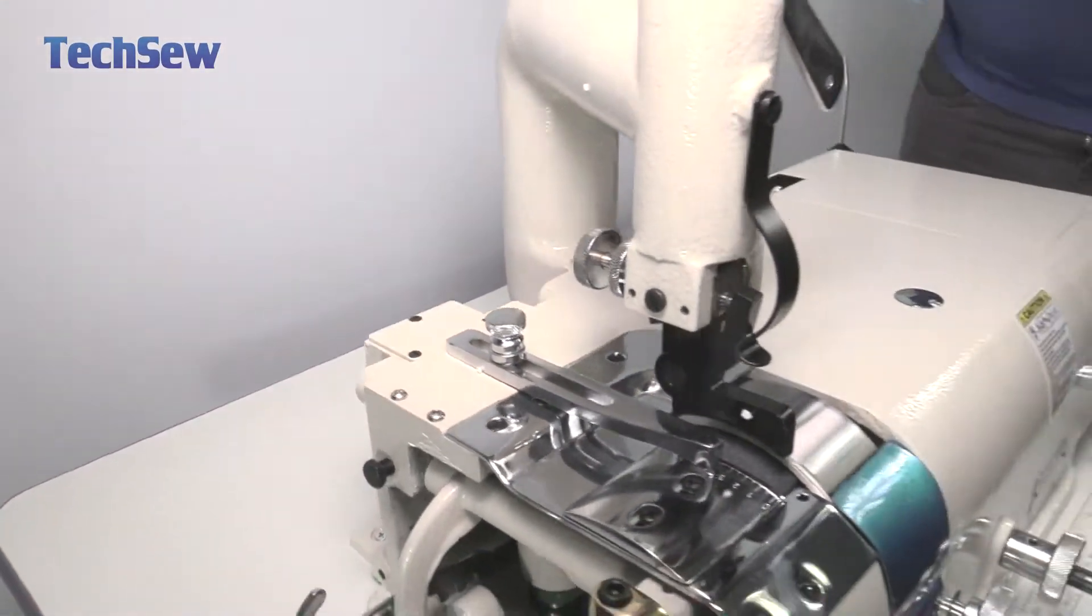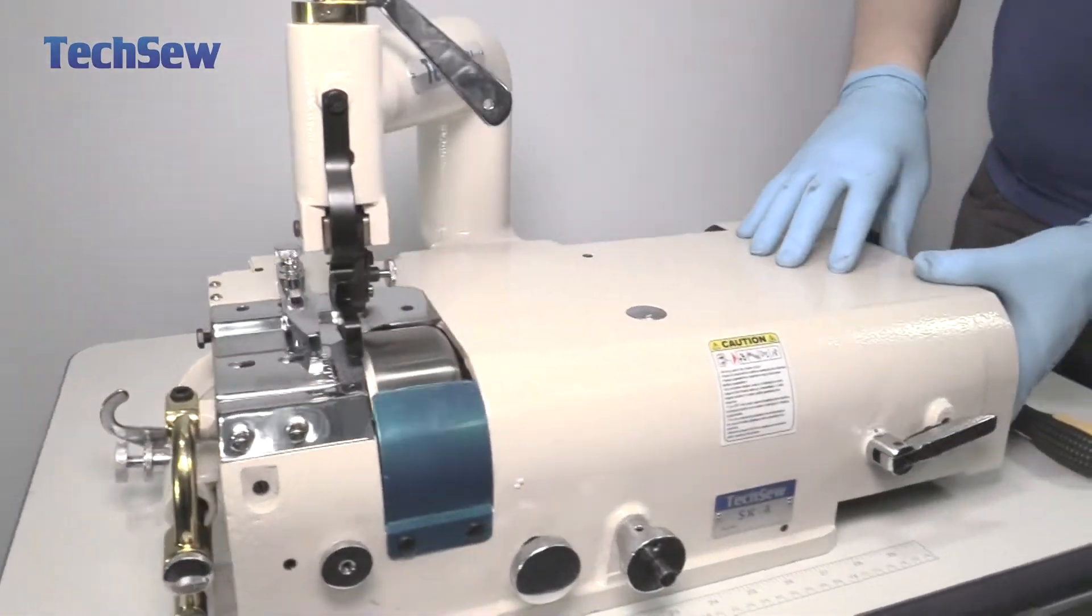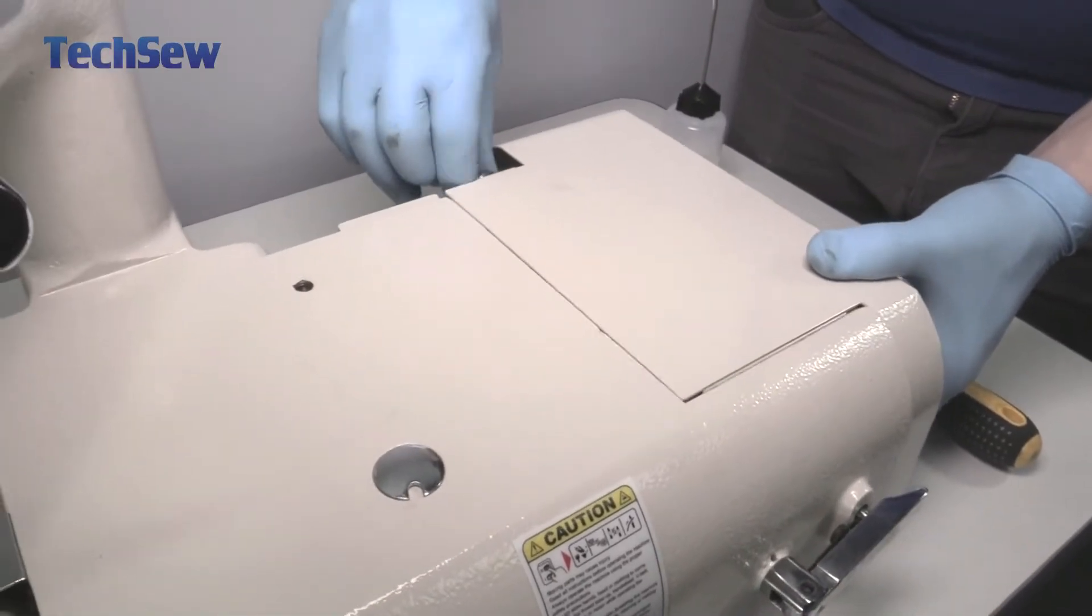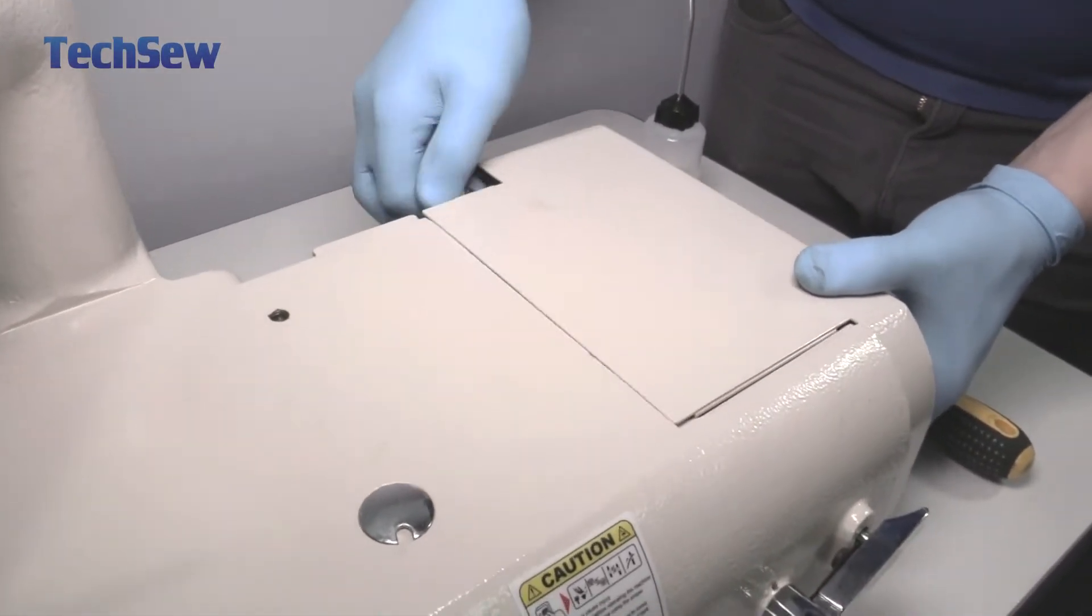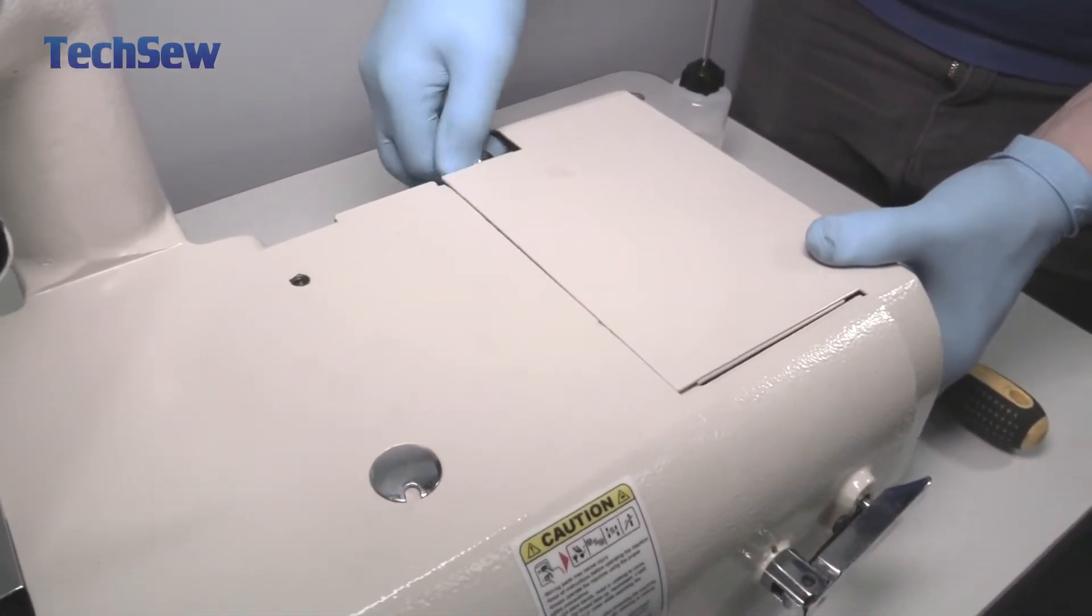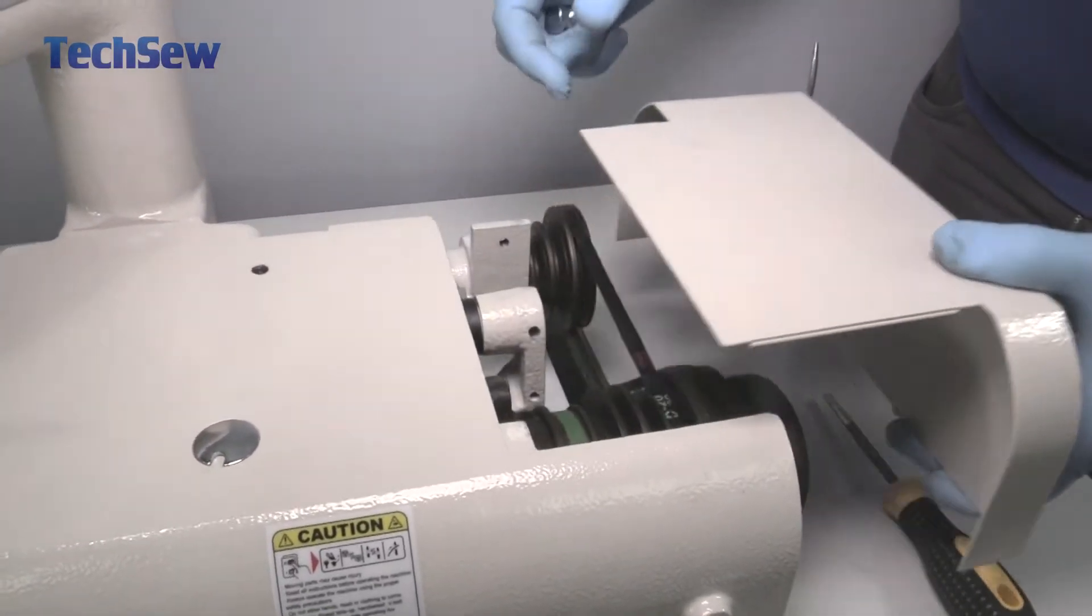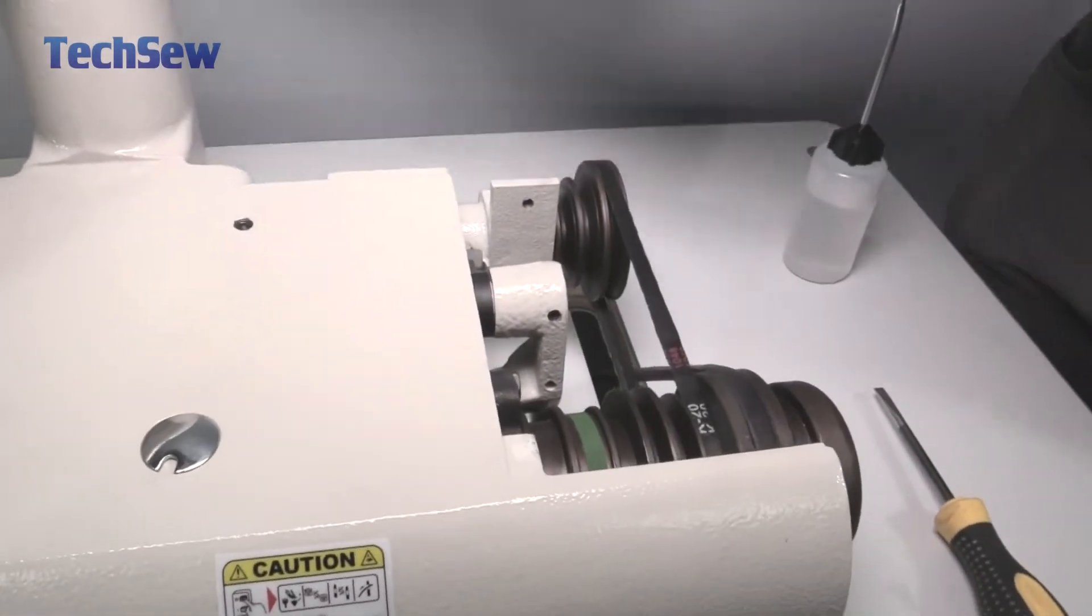Next step in the greasing procedure you will remove the belt guard. If you have to you can use a pair of pliers to loosen the thumb screw in the back. Gently remove it and set to the side.